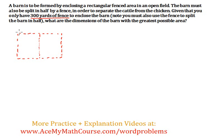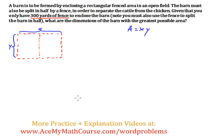I'm going to say that this side measures x and that side measures y. So the area of this barn will be just x times y, because the area of any rectangle is just the length times the width — so x times y.